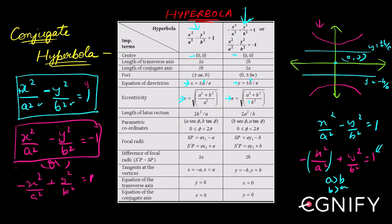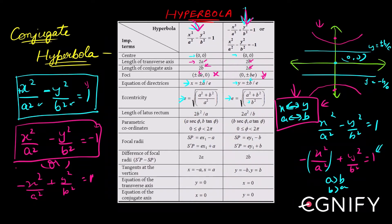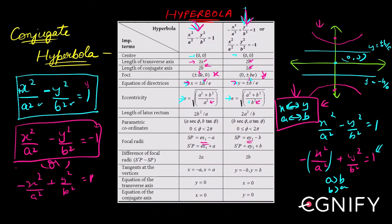The only thing happening when moving from the original hyperbola to its conjugate is: x changes to y, y changes to x, a changes to b, and b changes to a. You need to keep this interchange in mind everywhere. The length of the transverse axis is 2a, but a changes to b. Foci move from the x-axis to the y-axis. Even for focal radii — ex₁ ± a for the original — becomes ey₁ ± b for the conjugate.